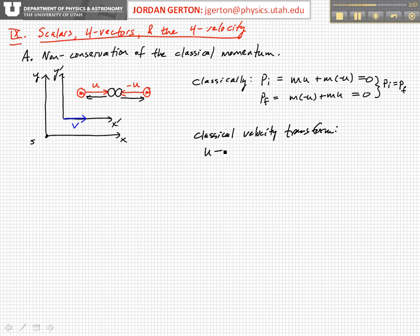then U prime is equal to U minus V, and minus U goes to minus U minus V. So in the primed frame, the initial velocity is just this. I've just plugged in these expressions. And if we look carefully what that is, then that's MU plus M times minus U minus 2MV.